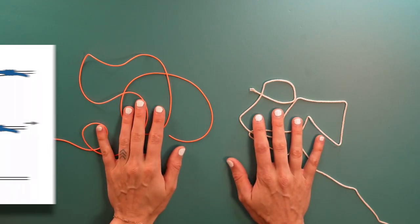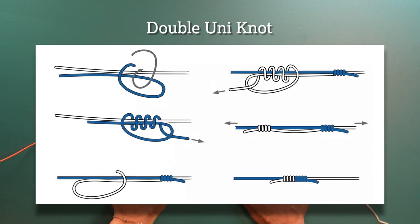Today we are going to tie the double uni knot. This is what the knot looks like. You can always come back and reference this image as needed.